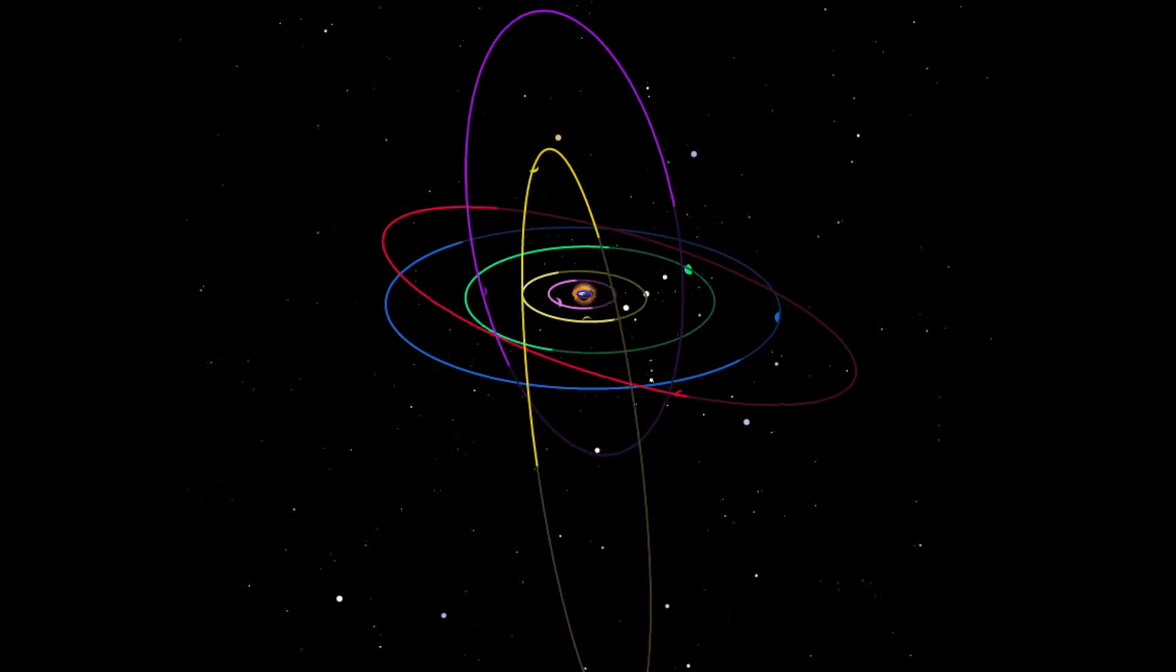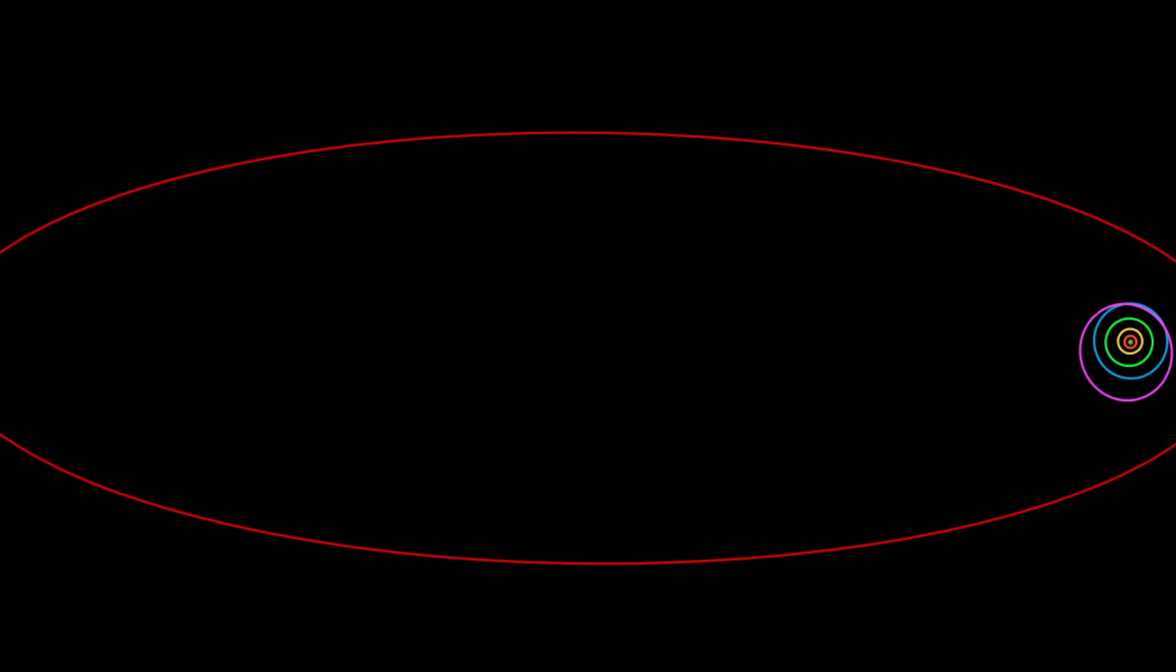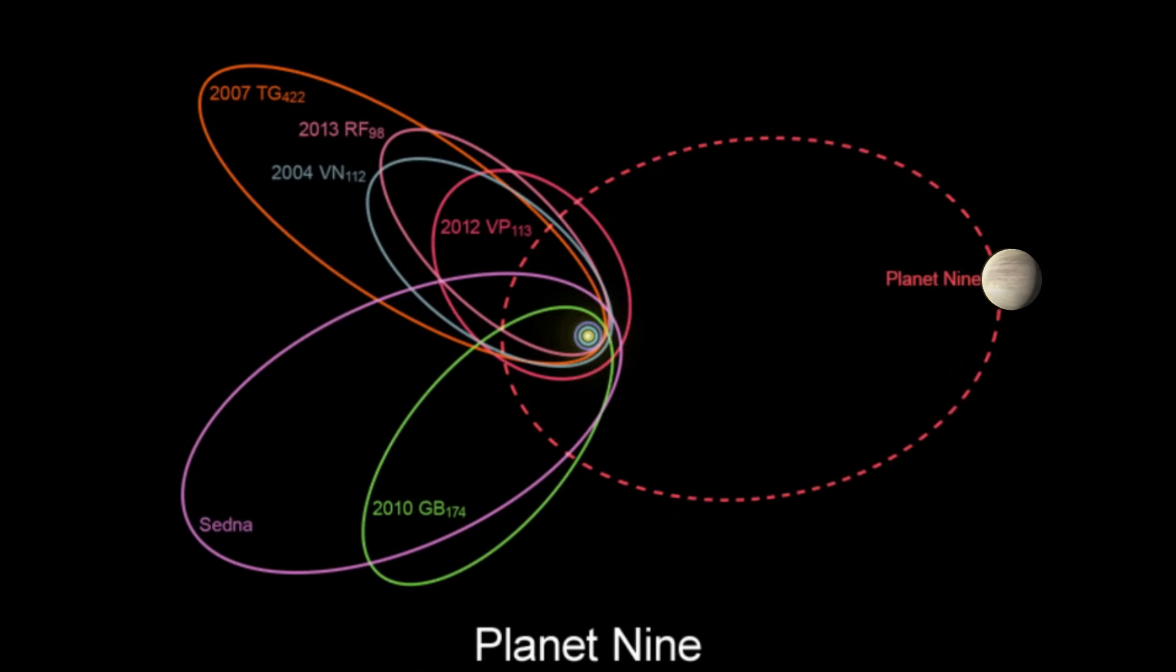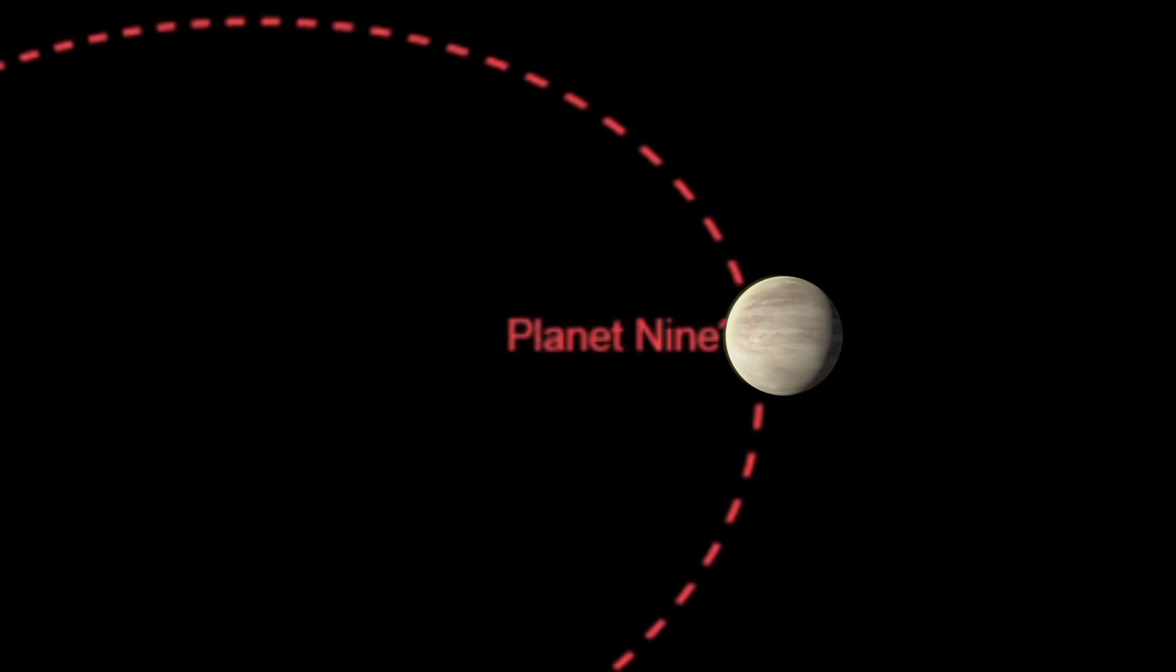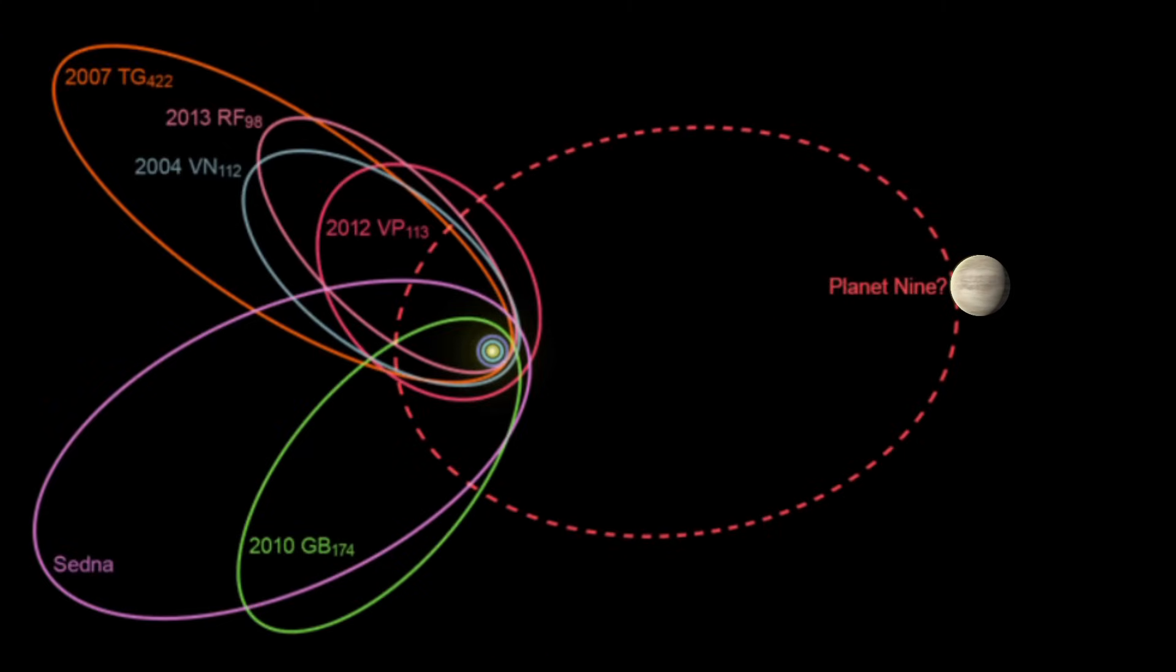The mystery of such distant, stretched-out paths has puzzled astronomers. In recent years, scientists have proposed that the strange, elongated orbits of Sedna and other distant TNOs might be influenced by the presence of an unknown planet far beyond Neptune, often referred to as Planet 9. This hypothetical world could be gravitationally shaping the paths of these distant objects.